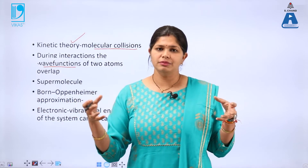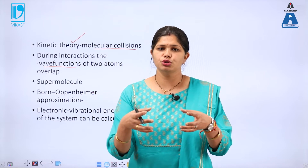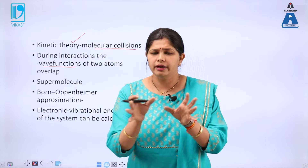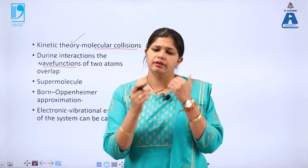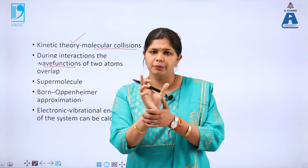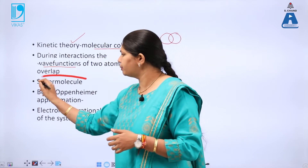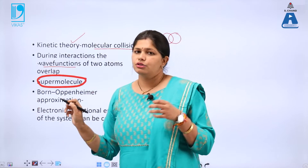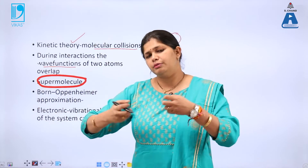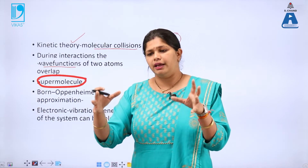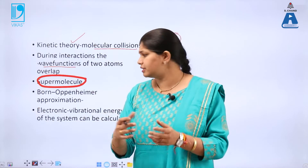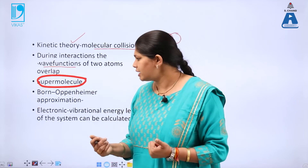When the atoms are moving close to one another and a perfect molecule has not yet formed, the intermediate state where the atoms are approaching and the bond has not yet formed is called a super molecule. Before the super molecule, the atoms were far apart; when the super molecule forms, they are in range, and then as the distance decreases, bond formation takes place.